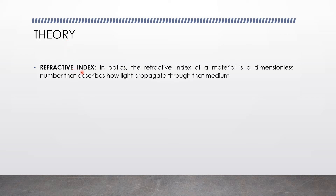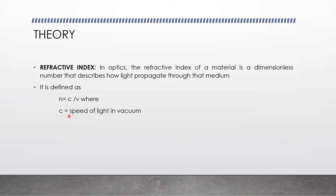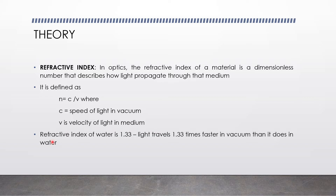Theory — Refractive Index: In optics, the refractive index of a material is a dimensionless number that describes how light propagates through that medium. It is defined as n = c/v, where c is the speed of light in vacuum and v is the velocity of light in the medium. The refractive index of water is 1.33, meaning light travels 1.33 times faster in vacuum than in water.